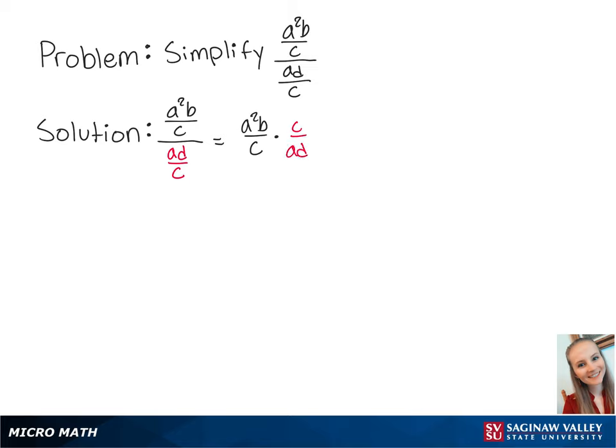To make this easier, we can rearrange the variables. So we can rewrite this as a over a times c over c times ab over d.